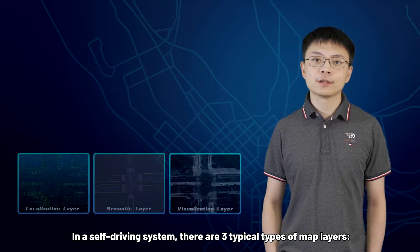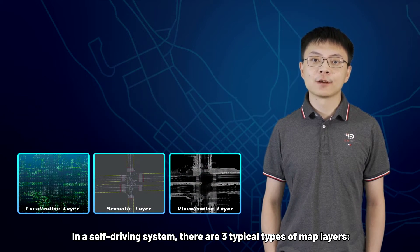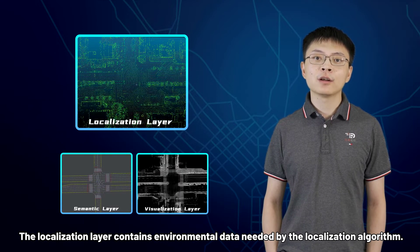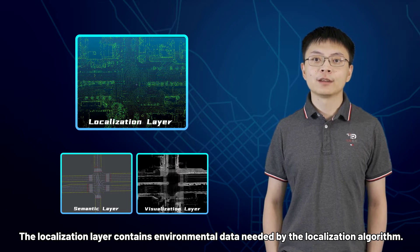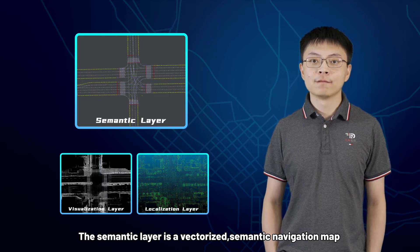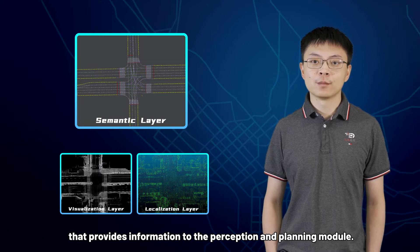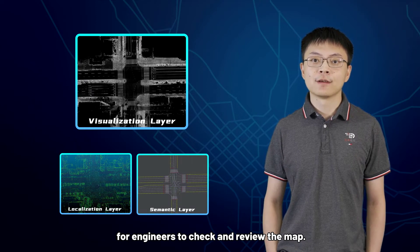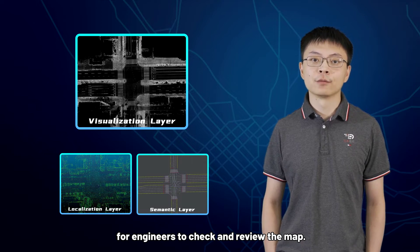In a self-driving system, there are three typical types of map layers: the localization layer, semantic layer, and visualization layer. The localization layer contains environmental data needed by the localization algorithm. The semantic layer is the vectorized semantic navigation map that provides information to the perception and planning module. The visualization layer contains a series of visualizations of intermediate results for engineers to check and review the map.